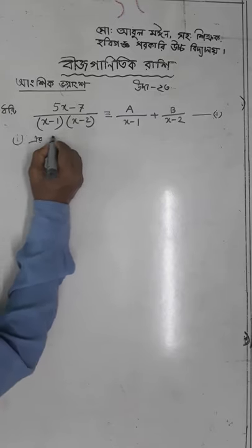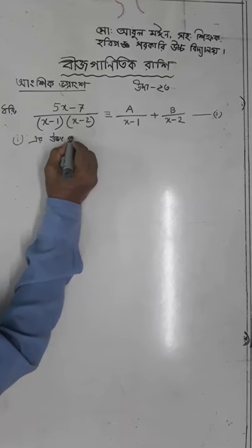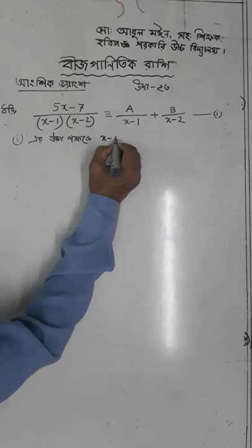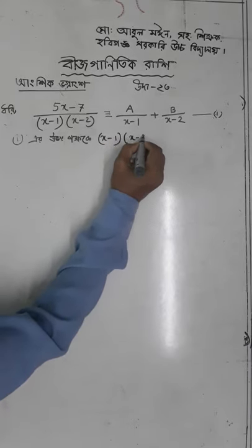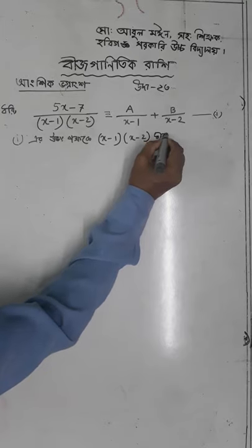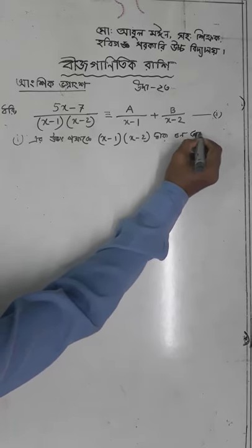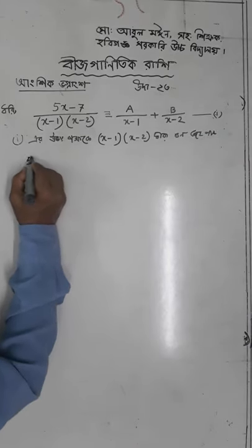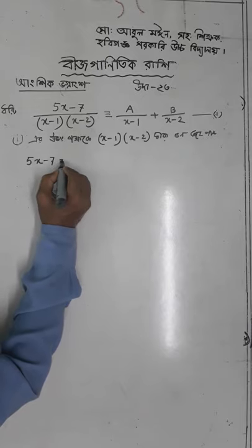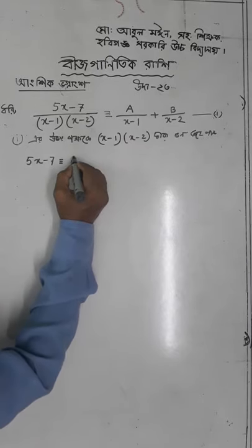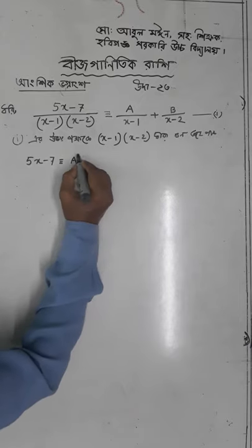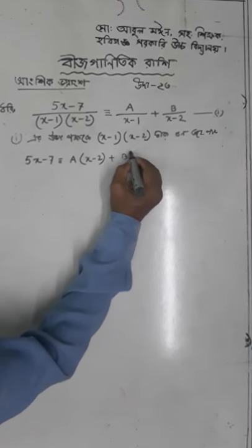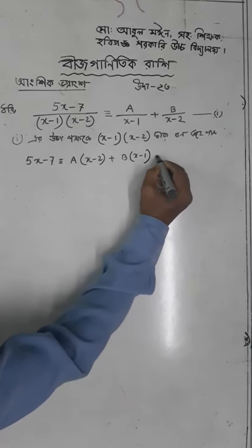X minus 1 into x minus 2 daragun kare upokhe 5x minus 7 equal A into x minus 2 plus B into x minus 1. This is show your x minus 2, x minus 1.